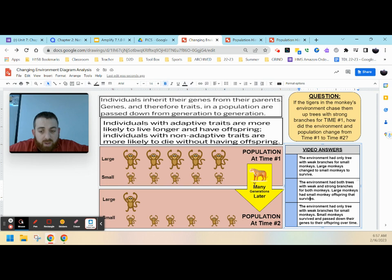Small monkeys are going to be able to survive because they can climb up those weak branches, whereas the big monkeys will and they'll break and the tiger will still be able to get them. So the only option that makes the most sense is the third option. The environment had only trees with weak branches for small monkeys. Small monkeys survived and passed down their genes to their offspring over time. So what we see is these small monkeys gave rise to this large group of small monkeys. These guys were not able to survive, and that's why we don't have many of them.